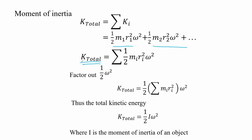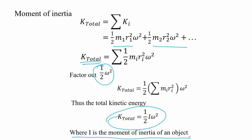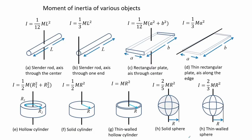When we factor out the one-half, since it is a constant, and the square of angular velocity, which remains the same for all particles since they move as one body, the total kinetic energy simplifies to one-half times I times the square of the angular velocity, where I represents the moment of inertia. The moment of inertia varies for different types of bodies and different positions of the axis of rotation. For a slender rod, figures A and B have different moments of inertia due to the position of rotation.